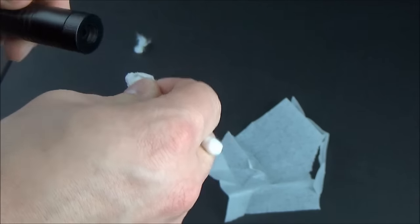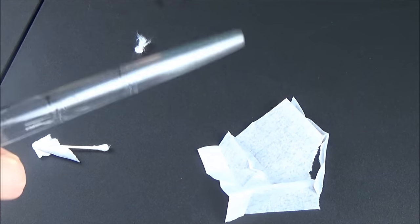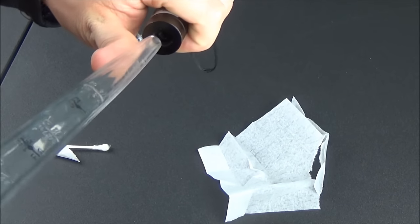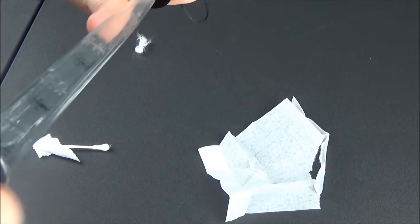I would also recommend that you do like three or four layers of the lens cleaning wipe wrapped around, that way when you're pushing it inside the laser to clean the lens, you don't accidentally have the toothpick break through the lens cleaning wipes and you're just rubbing the end of the toothpick on your lens.